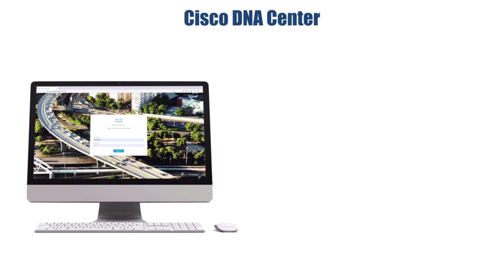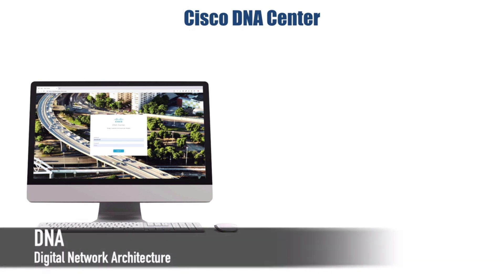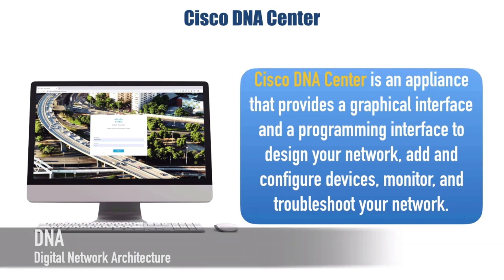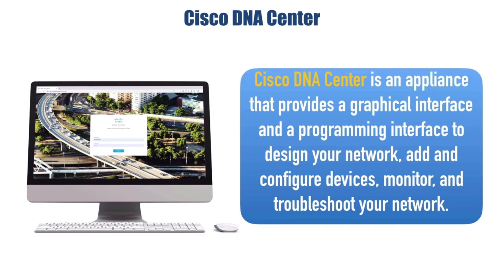In this video we want to take a look at a way to manage our network using a graphical and a programming interface. It's called Cisco DNA Center, which is an appliance that we can install in our network, or there's an option for having DNA in the cloud. This gives us a graphical interface and a programming interface to design our network, add devices, configure devices, monitor, and troubleshoot our network. Cisco has had other graphical front ends to router configuration such as Cisco Configuration Professional, but DNA Center is way beyond that in the scope of what it can do.